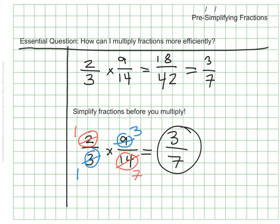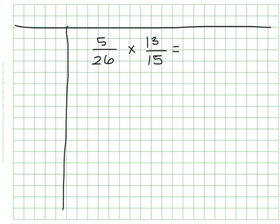Let me do another example. Here I have 5/26ths times 13/15ths. So here's a great example of when I use this strategy. I don't really want to deal with multiplying 26 by 15. It's a good time to pre-simplify.